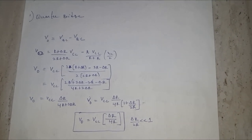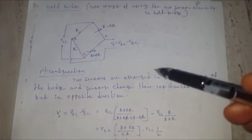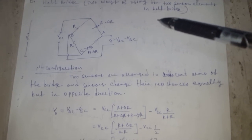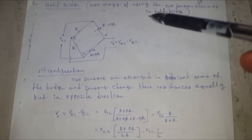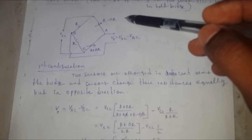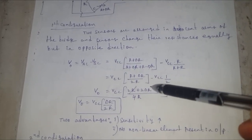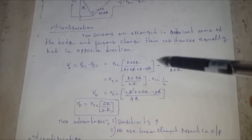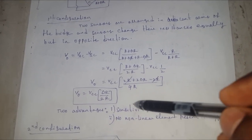For the half bridge, there are two types of configurations. In the first configuration, two sensors are arranged in adjacent arms of the Wheatstone bridge, and the resistances of these two sensors change equally but in opposite directions — one is +ΔR and the other is −ΔR. Deriving the output voltage gives V_out = VCC × ΔR / 2R.